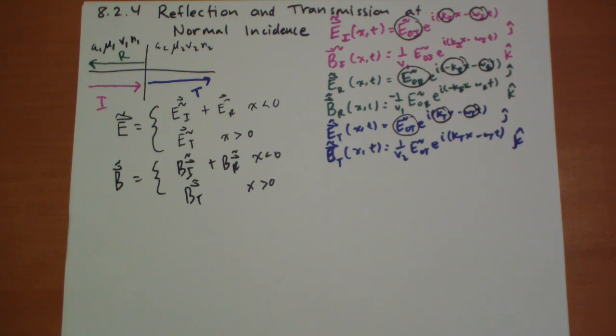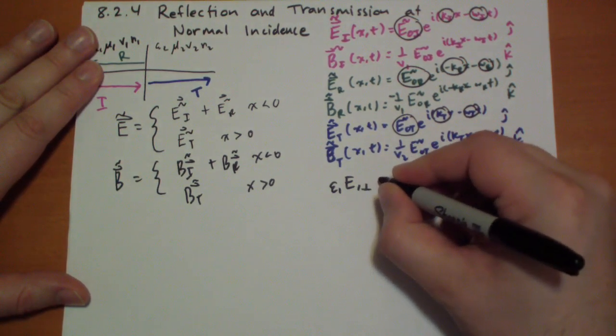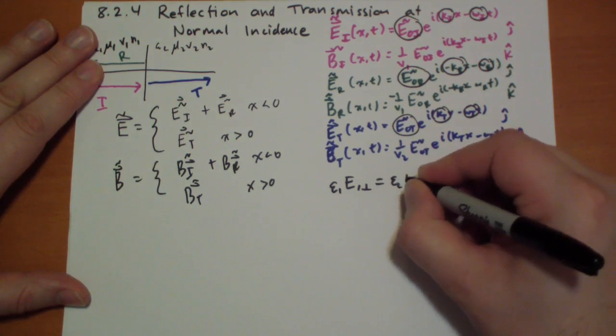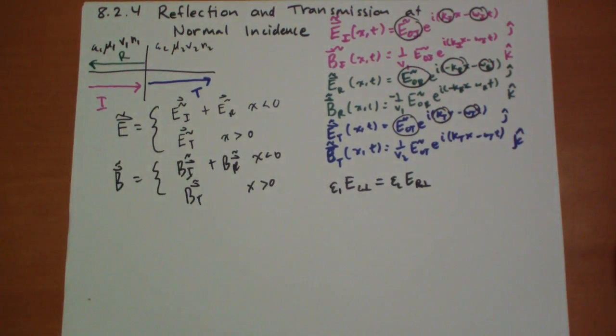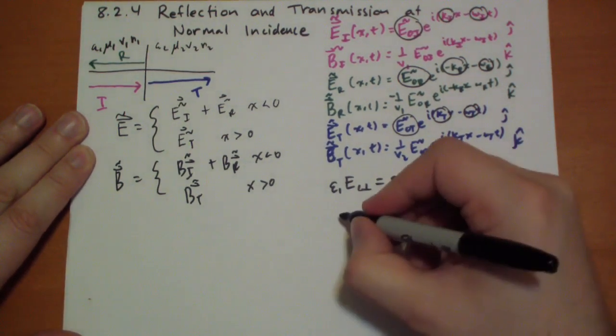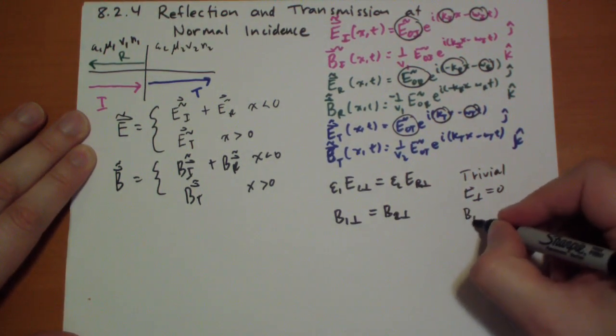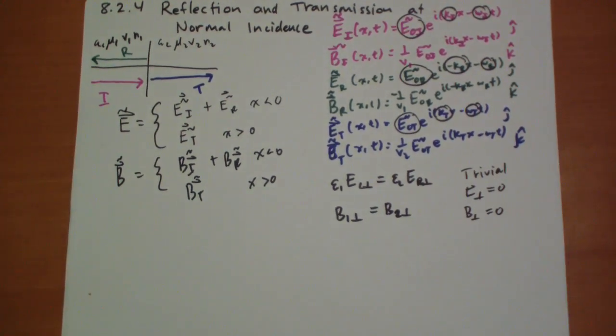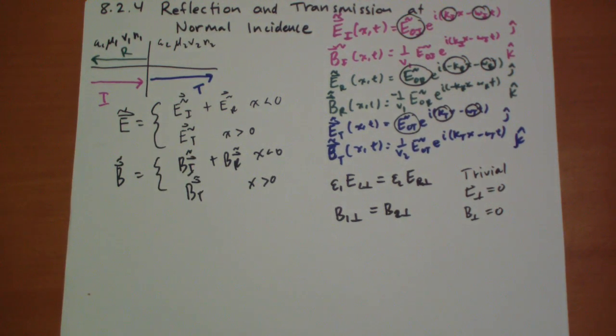The boundary conditions, let me write them out very quickly here. We have the first one says that epsilon 1 of E1 in the perpendicular direction to the boundary has to equal epsilon 2 E2 of the perpendicular. Or the electric field on the left side has to equal the electric field on the right side in the perpendicular direction. Well, this is trivial, since the perpendicular component of E is always equal to 0. Then we have the B field has to equal the B field in the perpendicular direction. Again, the B field perpendicular is equal to 0. So these are trivially satisfied.